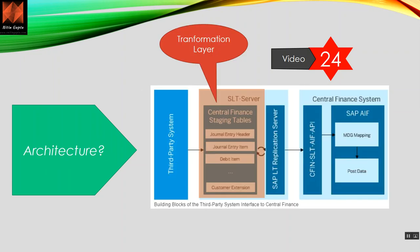Let's look at the architecture. In the standard architecture, the first block — which for SAP systems would say ECC — here shows 'third-party'. As an example, we have an Oracle system as the source. On the right-hand side we have SAP Central Finance, which is S/4 HANA, and in the middle we have the SLT Replication Server.